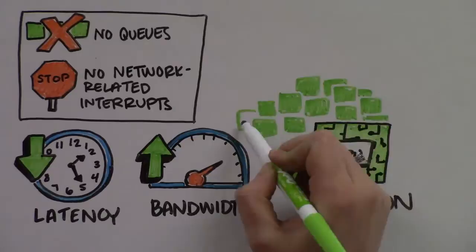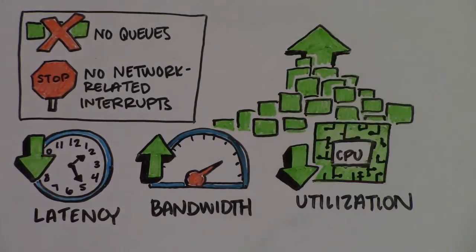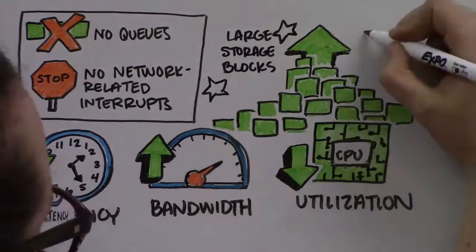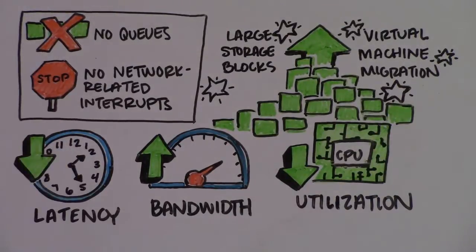The advantages of kernel bypass increase with the size of the messages, which is a key reason iWARP shines with large storage blocks and virtual machine migration.